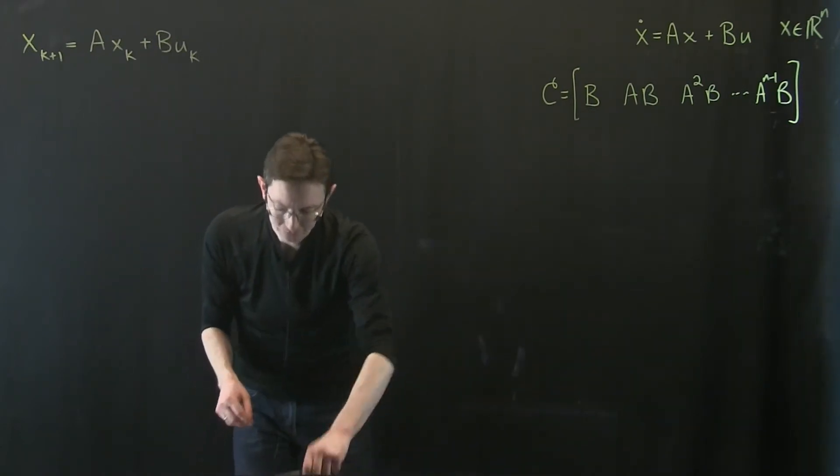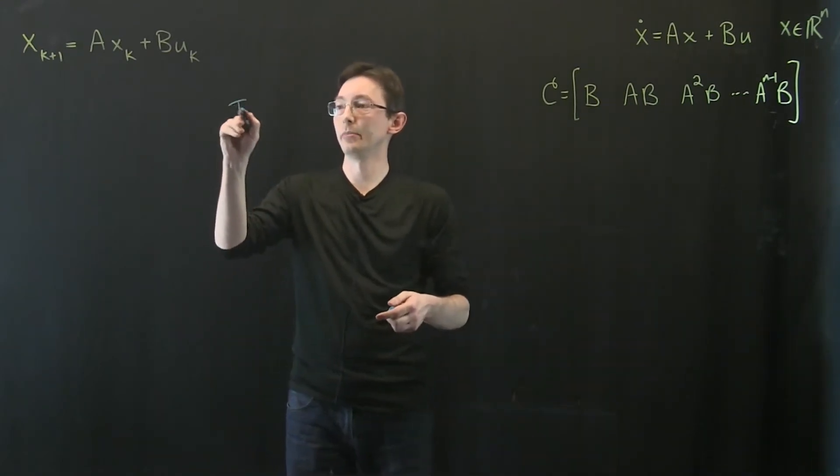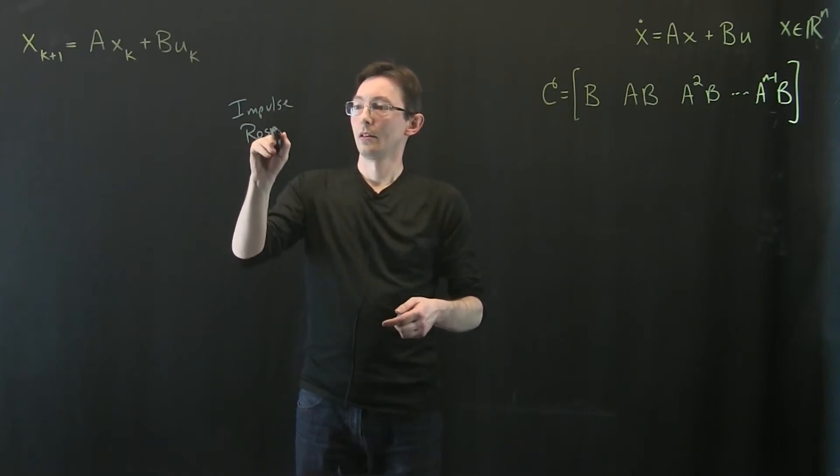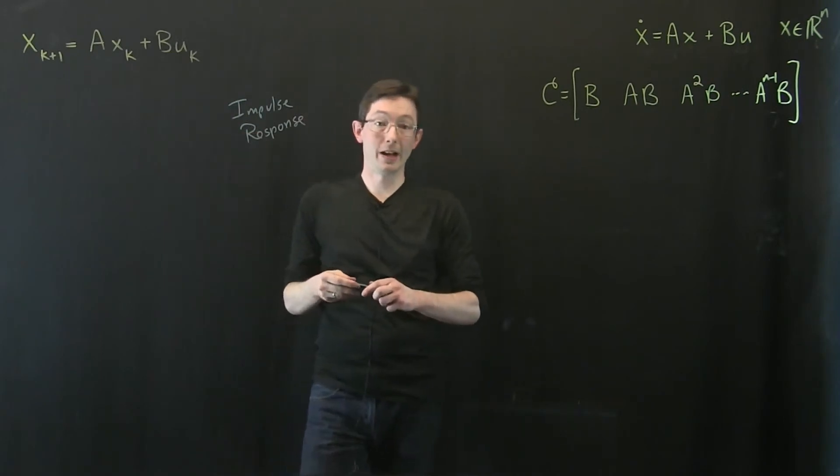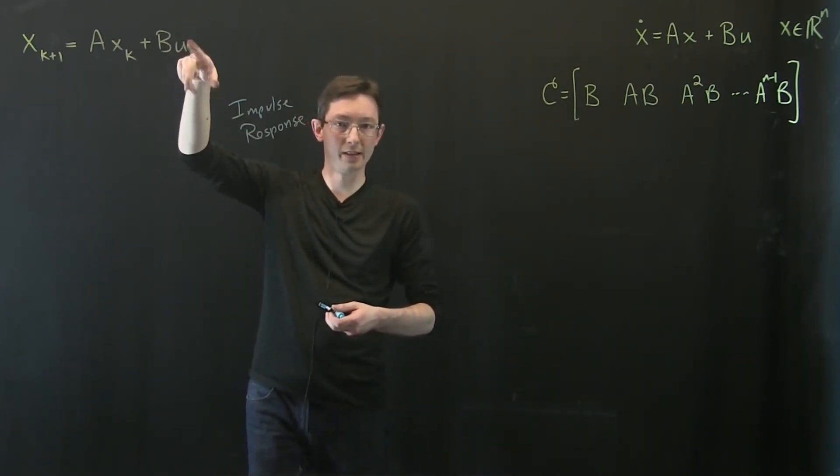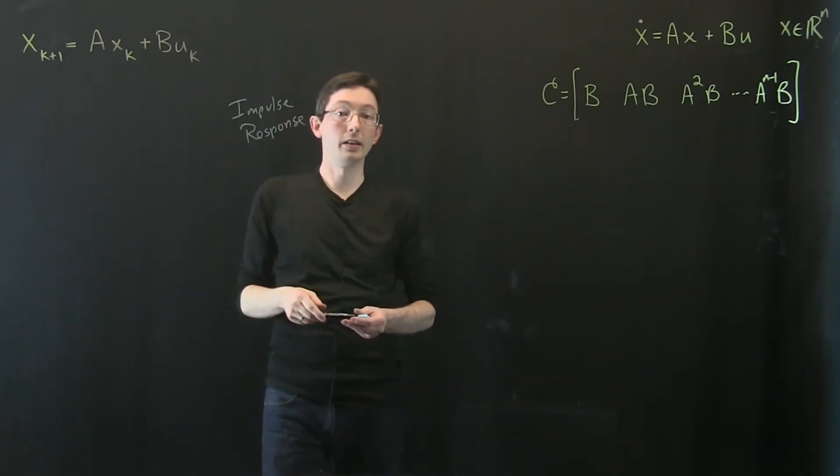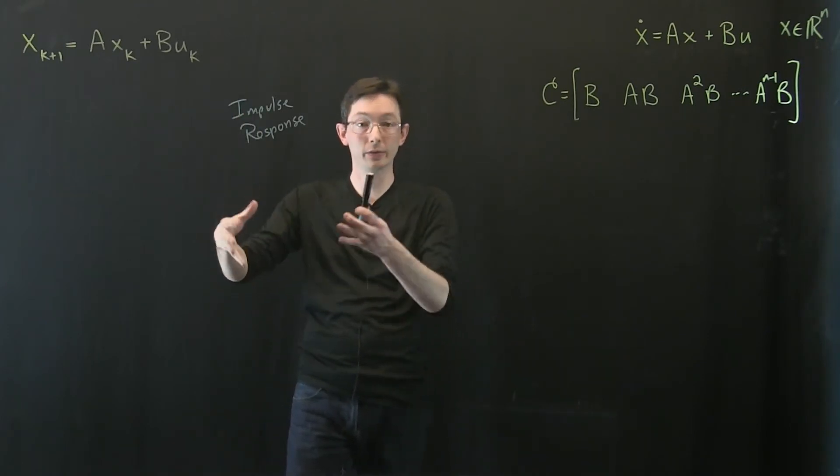And then what I want to do is I want to write down the impulse response. So the impulse response essentially means I'm going to kick the system in the u direction, and let's just assume that u is a single input channel so like a scalar u. We're going to kick the system in u and then we're going to measure what happens to x. We're going to let that impulse ring through the system.